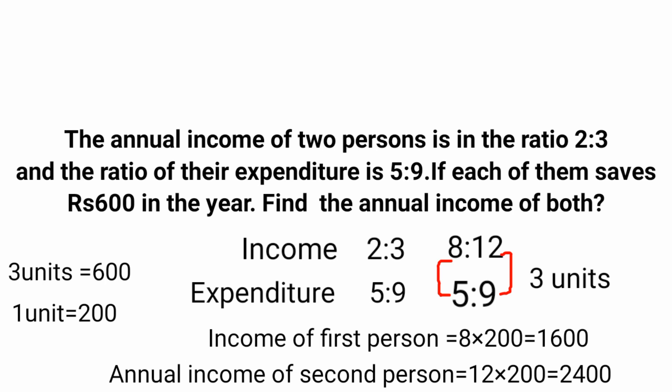If the question asks for the expenditure of both persons, multiply the new expenditure ratio 5:9 by the value of one unit, which is 200. So the expenditure of the first person is 5 into 200, which is 1000, and for the second person it is 9 into 200, which is 1800.